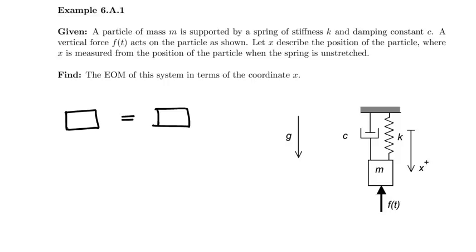So if the particle deflects downward with a displacement x, the spring is actually going to contribute a spring force of magnitude kx upward, and the dashpot is going to contribute a force of the form c times x dot. In addition to this, we'll have the applied force f(t), and we'll have the weight which I can write as m times g.